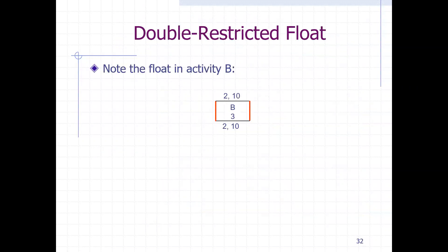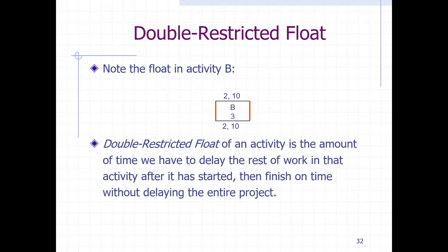So what is the double-restricted float? The double-restricted float, by definition, is the amount of time we have to delay the rest of the work in that activity after it has started, then finish on time without delaying the entire project.